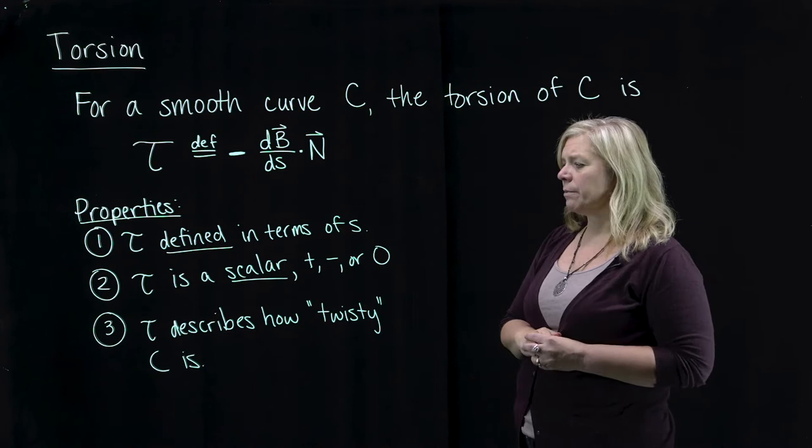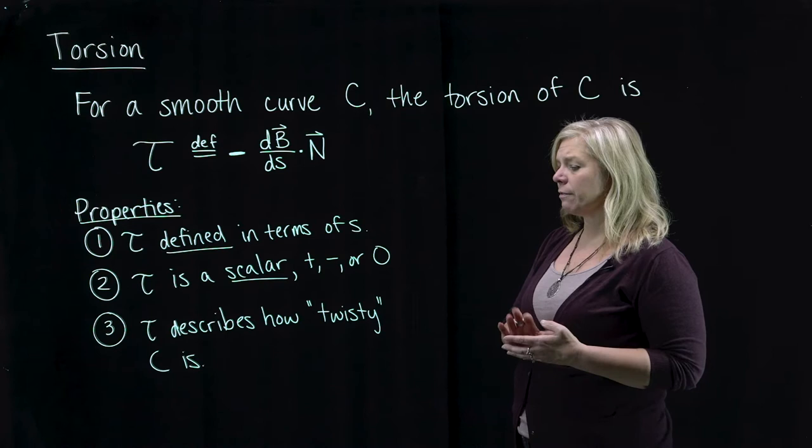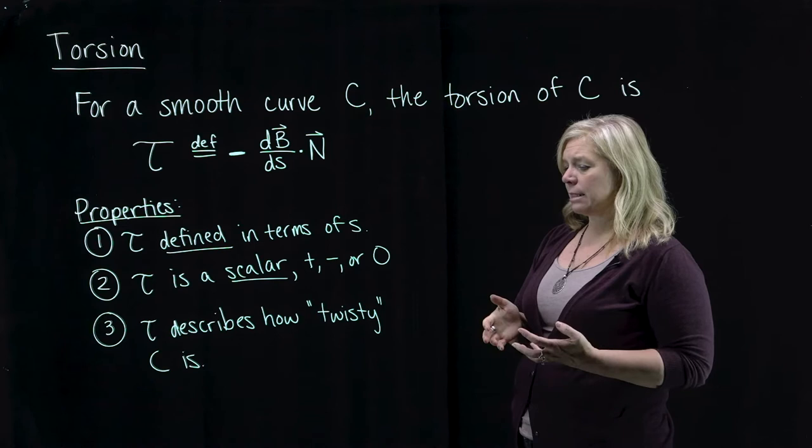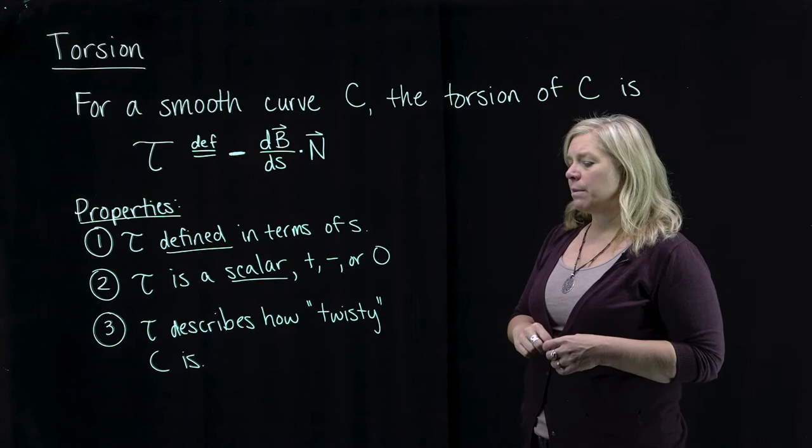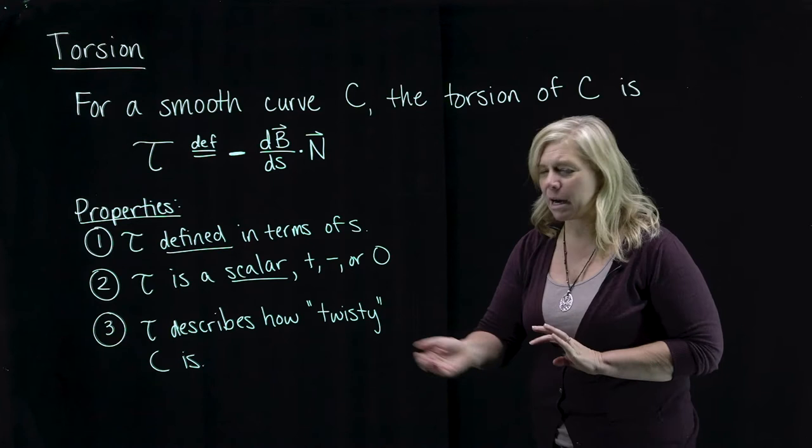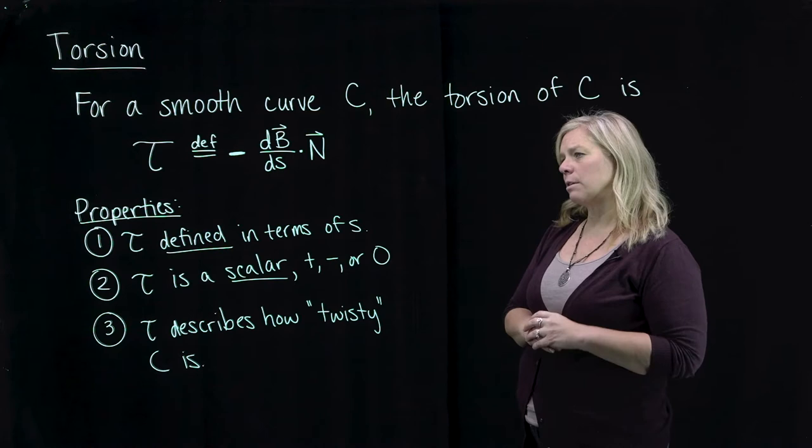The last property is a little difficult to see just from the formula, but torsion describes how twisty motion along a curve is. That's a non-mathematical way of describing it, but we're going to look at some examples and think about torsion with those examples.